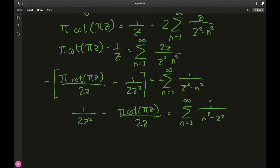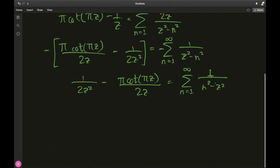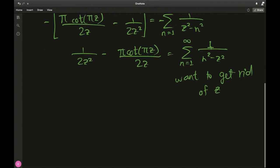So we have 1 over 2z squared minus π times cotangent of πz over 2z now being equal to sum from n equal to 1 to infinity. Now we can correct the order in the denominator: we have 1 over n squared minus z squared. So this is almost the Basel problem, except in the Basel problem there is no z.